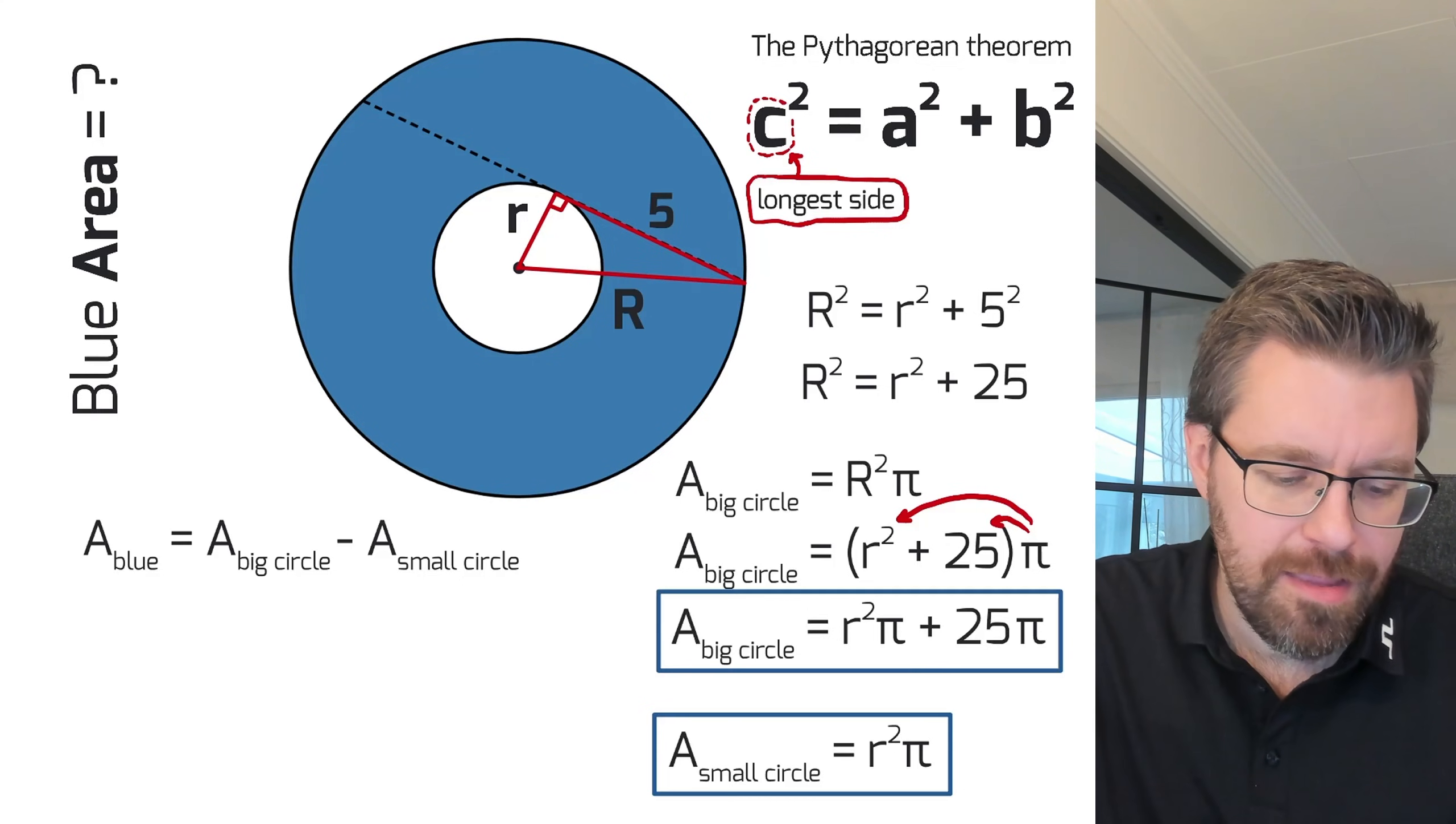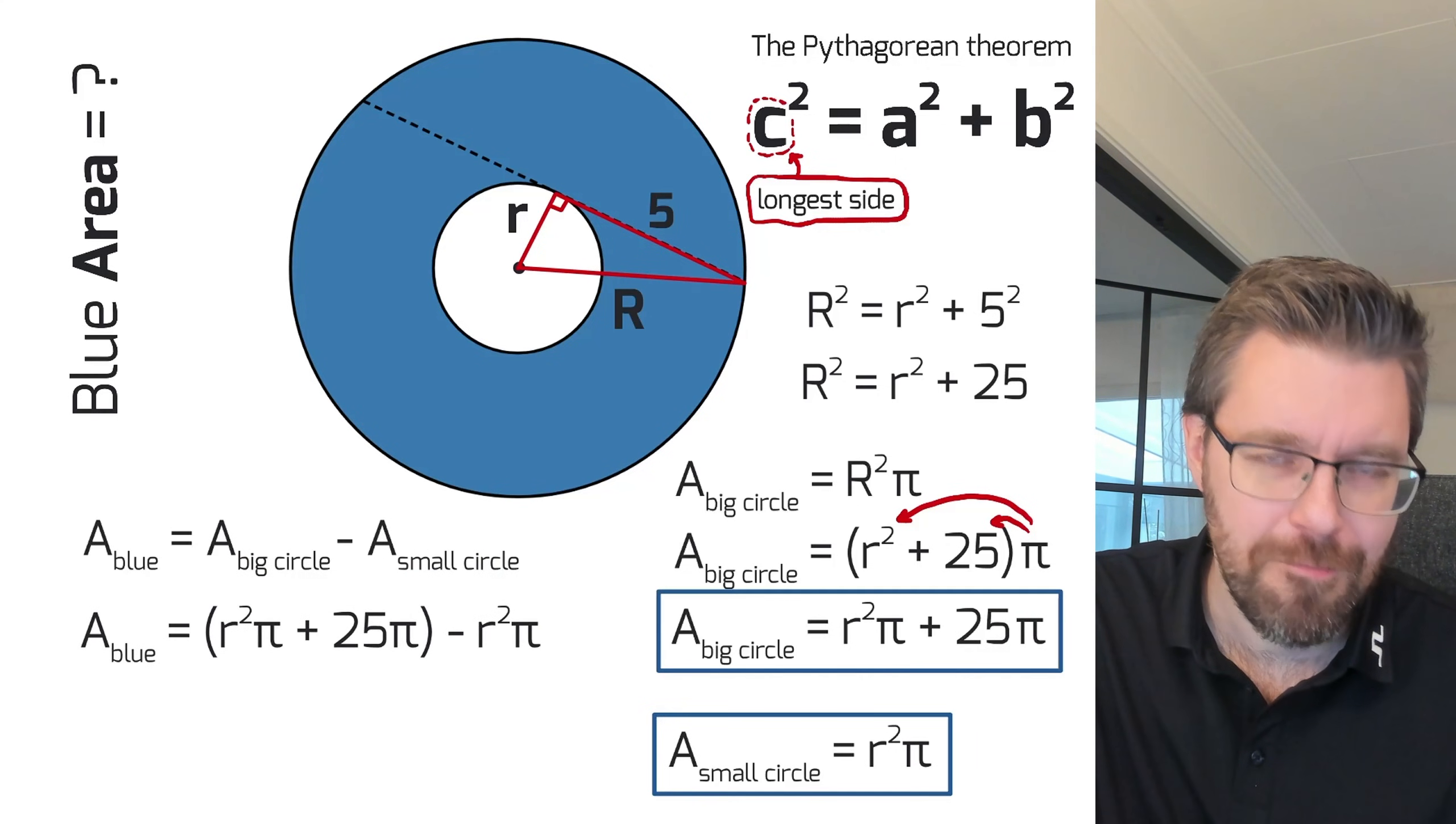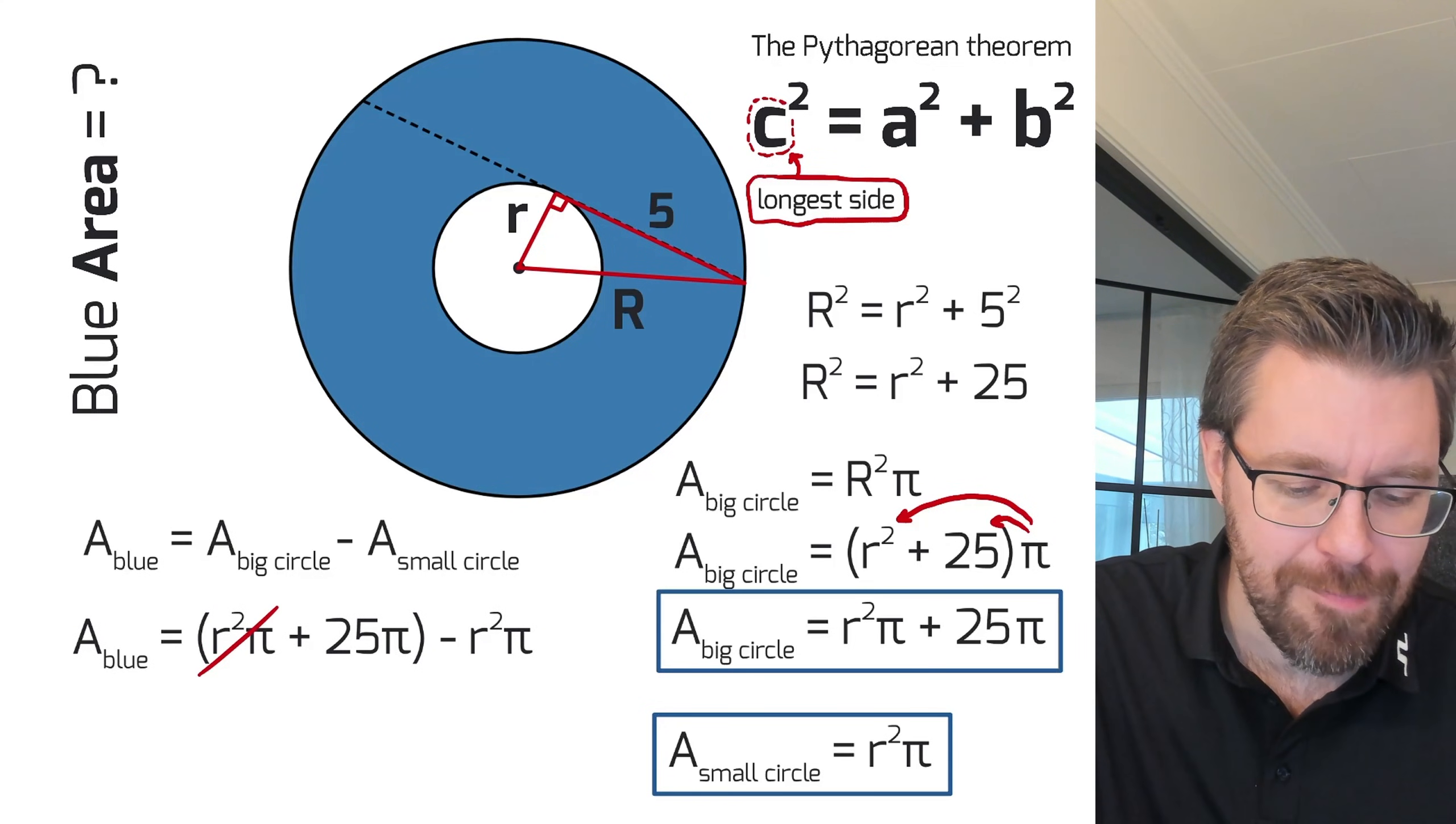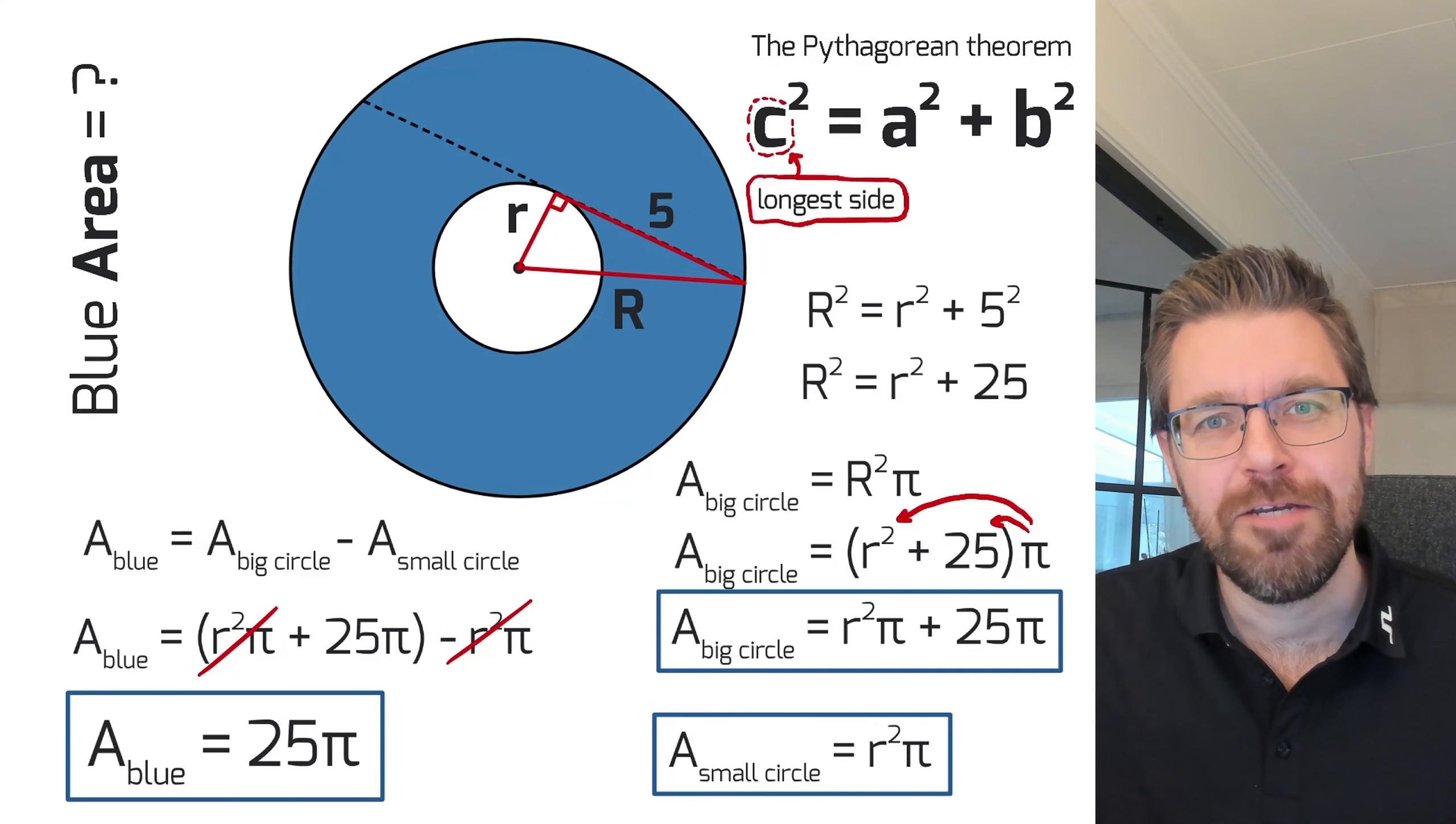We can substitute this bit here with the area for the big circle, and the area of small circle can be substituted with r²π. And then we're getting this expression here. And if you take the pencil and cancel r²π and minus r²π, then the blue area is 25π.